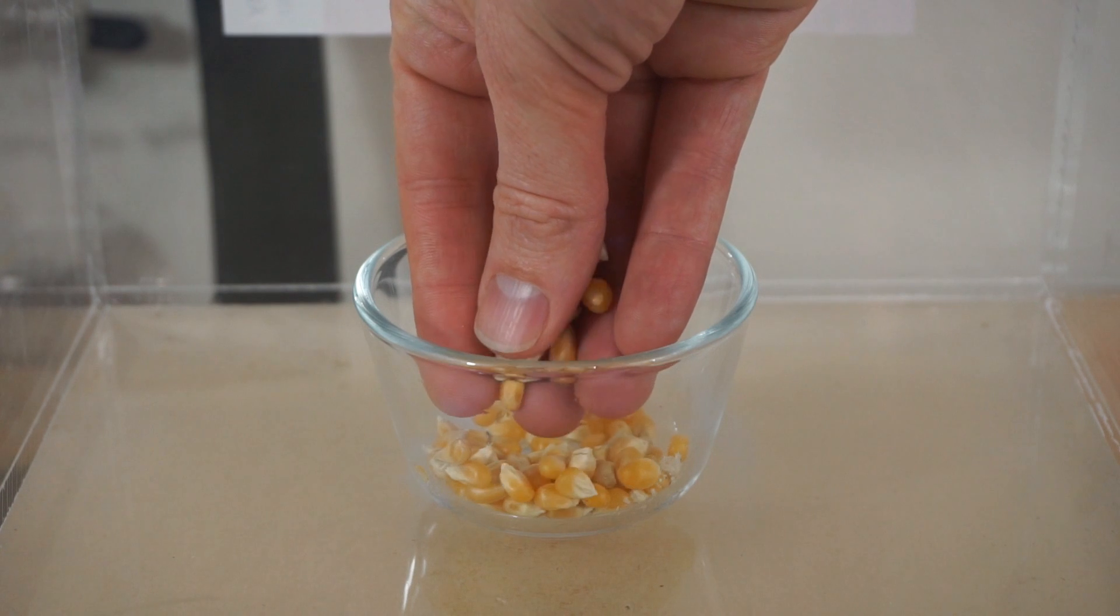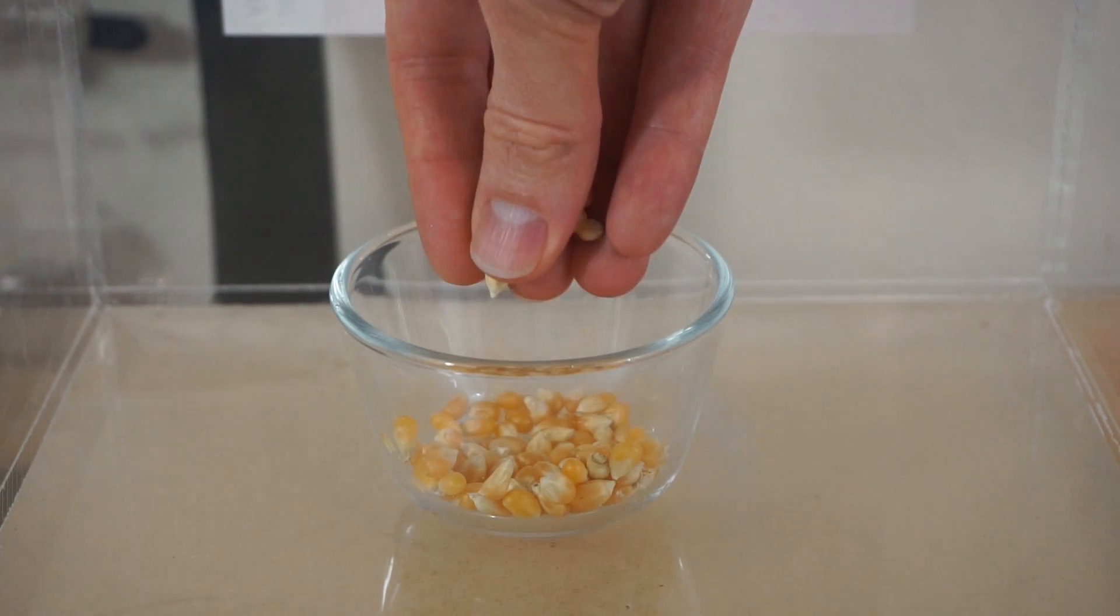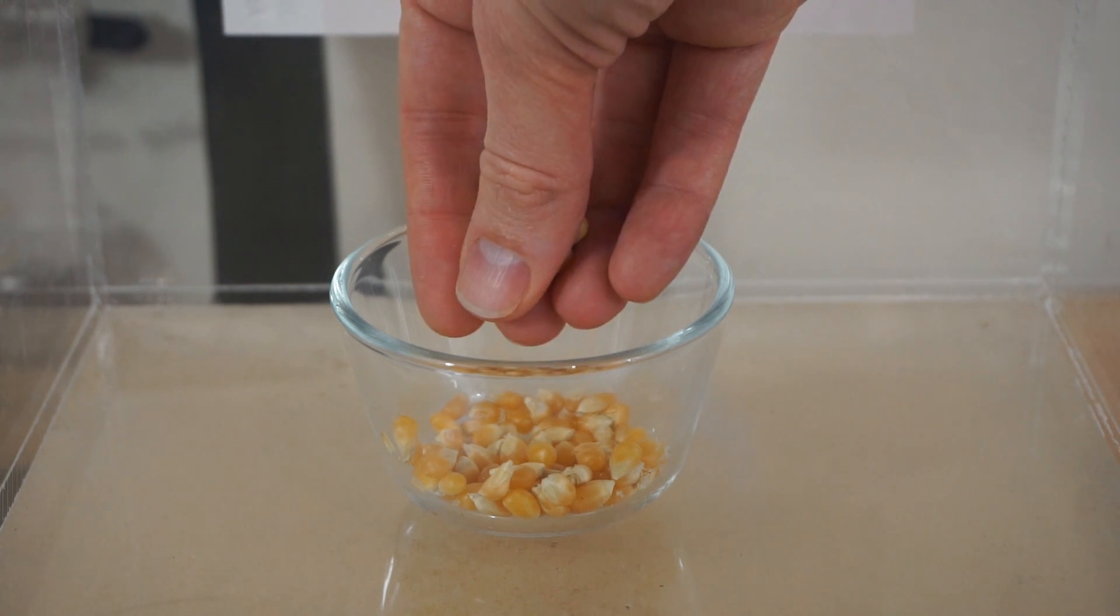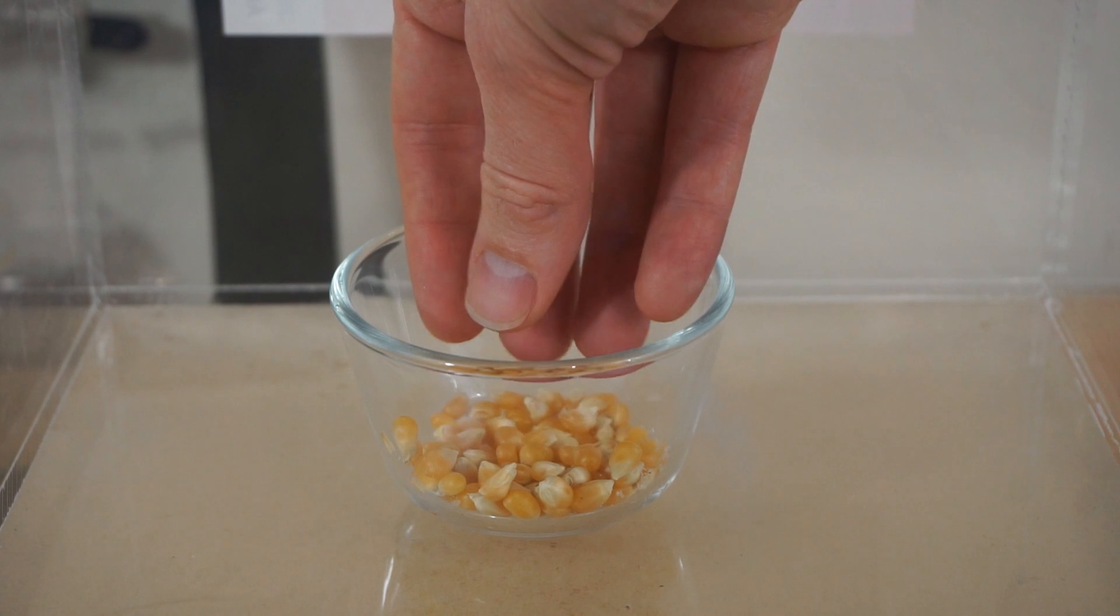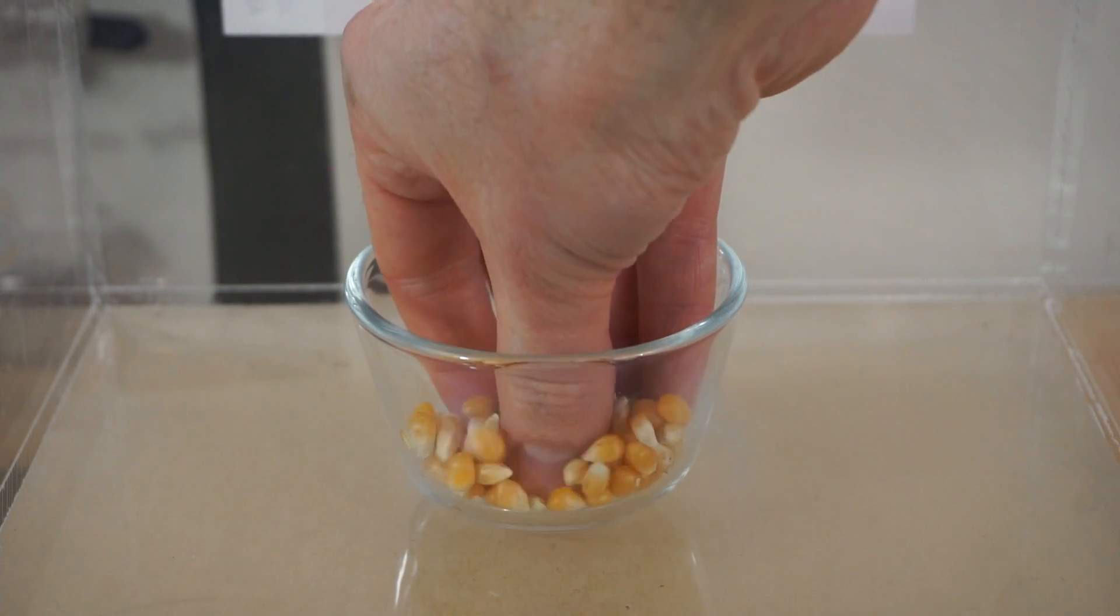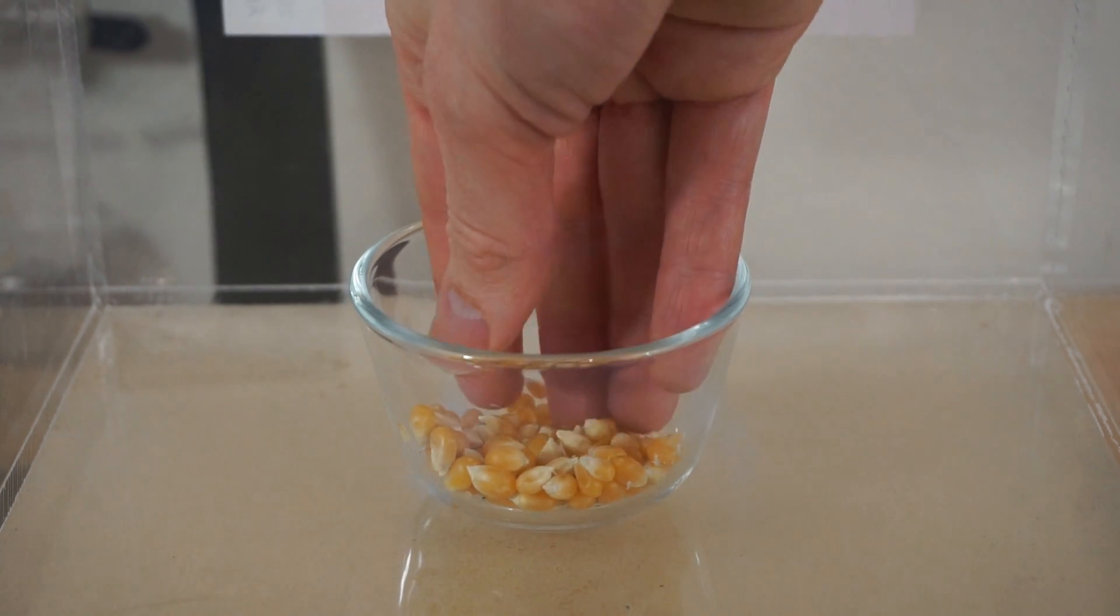Popcorn kernels normally pop because they have a small amount of moisture in there, a small amount of liquid, and that liquid becomes a vapor when you heat it up. The vapor eventually gets to high enough pressure that it pops the seed up and it cooks all the starch in there, and that makes the popcorn out of the popcorn kernel.